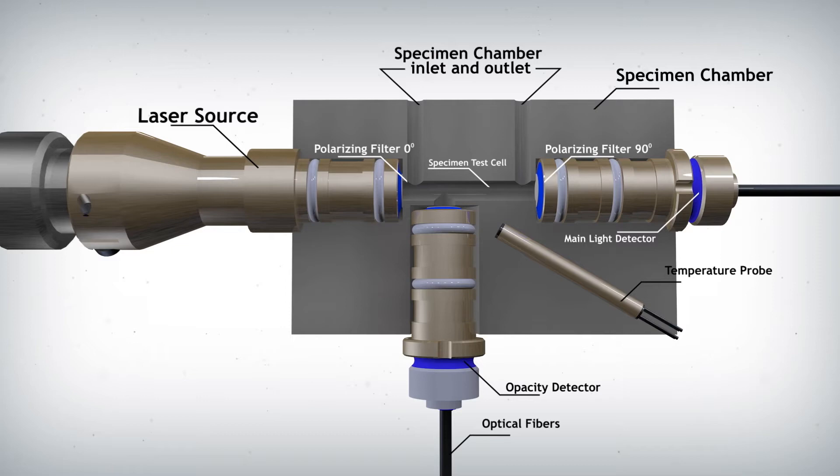The detection system is composed of a monochromatic laser, two detectors, polarization filters, a temperature probe, and a specimen test cell embedded in a precisely controlled thermal block.